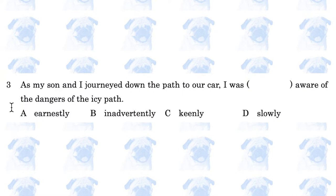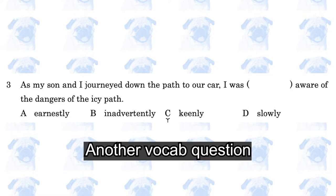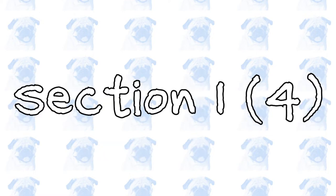Number 3. As my son and I journeyed down the path to our car, I was blank, aware of the dangers of the icy path. The answer is C, I was keenly aware.